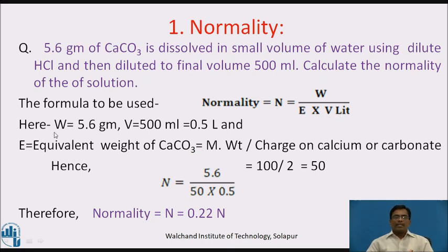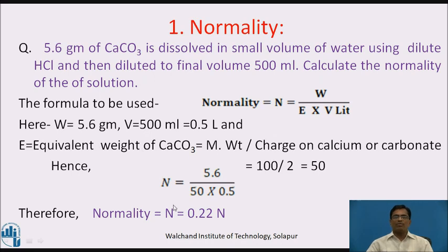Given: weight = 5.6 grams, volume = 500 ml = 0.5 liters. The equivalent weight of calcium carbonate is calculated as molecular weight divided by charge, which is 100 / 2 = 50. So the equivalent weight of calcium carbonate is 50. Putting all these values in the equation: N = 5.6 / (50 × 0.5). The answer is normality = 0.22 N.